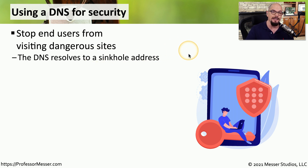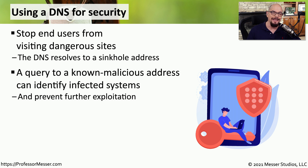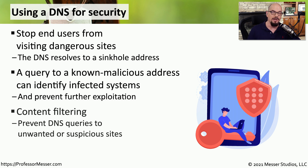By doing that, we can immediately identify stations that may have been infected with malware, and stop them before they're able to communicate back to the central server for that malware infestation. Any time we see an internal device try to access that sinkhole address, we can assume it may have been infected by malware. This prevents additional exploitation and allows us to perform internal mitigation. This also effectively acts as content filtering — if our DNS has a list of unwanted or suspicious sites, users won't be able to visit those locations because our DNS will not provide proper DNS resolution.